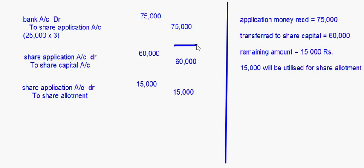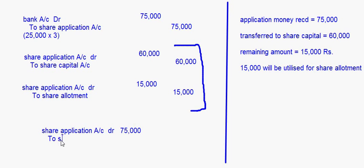You can also combine the second and third entries into one combined entry: Share Application Account debit ₹75,000, to Share Capital ₹60,000 and to Share Allotment ₹15,000. So ₹15,000 is now with the company. Then when allotment money becomes due, the entry is Share Allotment Account debit to Share Capital Account — 20,000 × 4 = ₹80,000.